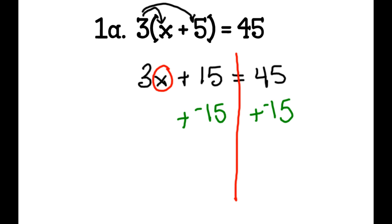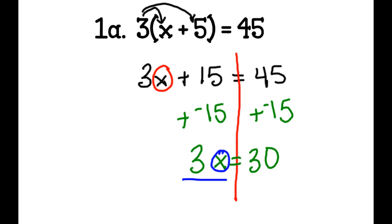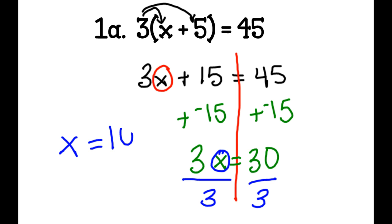That leaves me with 3x equals 30. Then to undo the multiplication, I divide both sides by 3, and I get x equals 10. I circle it, and that's my answer.